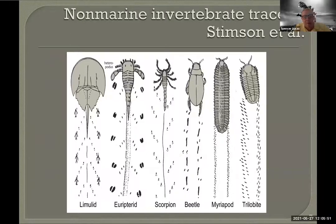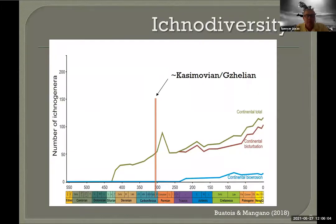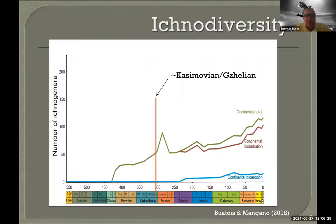Matt Stimson talked about looking at the trace fossil record, both of invertebrates and vertebrates on land — quite a diverse record. One of the most important points Matt made is that when you look at ichno-diversity — the number of ichnogenera or ichnospecies — it's not really the same as what we think of as biodiversity. This is really the diversity of behavior, not exactly taxonomic diversity, and the relationship is not linear — it's very complicated.